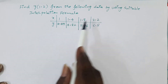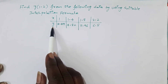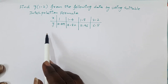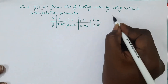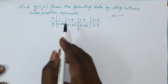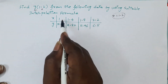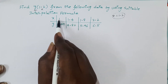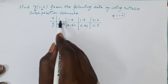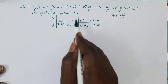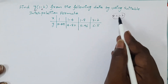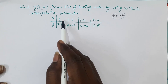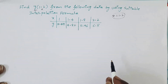This is the given data. The first row represents x values and the second row represents corresponding function values of y. We have to find the y value at x equal to 1.2. Since 1.2 lies at the starting of the given data — x values are 1, 1.4, 1.8, 2.2 — and 1.2 lies in the first interval, we can use Newton's forward interpolation formula.